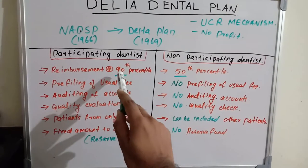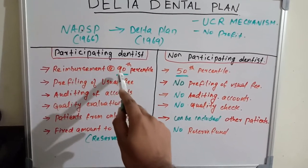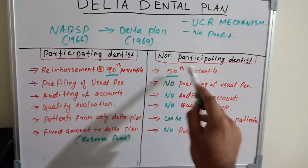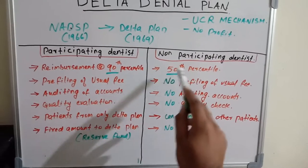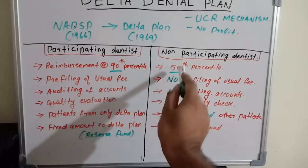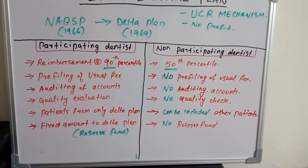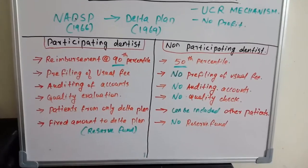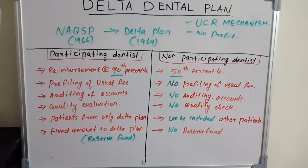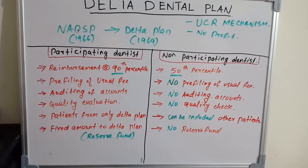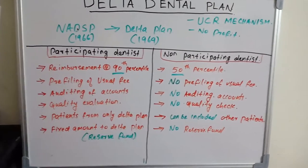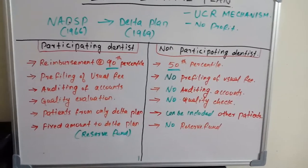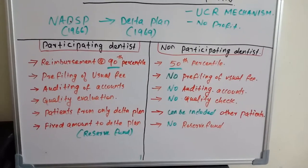The participating dentist will get reimbursement at the 90th percentile, whereas for the same treatment the non-participating dentist will get only the 50th percentile — that is a huge difference. However, the participating dentist has to pre-file his usual fee. We have seen what usual, customary, and reasonable fee means. The non-participating dentist does not need to file his usual fee.